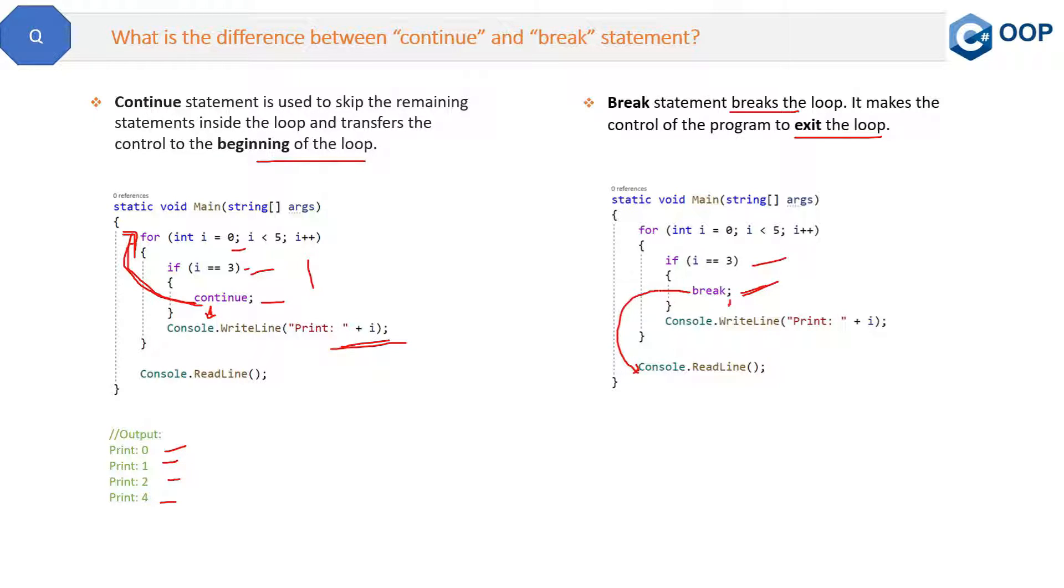It will not go to the starting of the loop which continue was doing, but it will rather bring out of the loop. So the output this time will be 0, 1, and 2 because at 3 the loop was broken, and so 3 and 4 are not printed. So this is break. Now let me show you the same thing in Visual Studio.